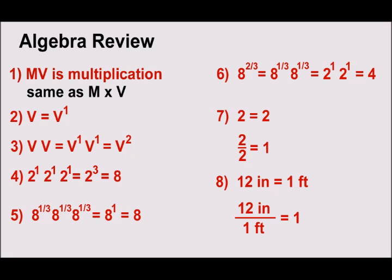Equation 6 is a bit more interesting where we have 8 to the 2 thirds. This is equal to 8 to the 1 third times 8 to the 1 third. And if you compare equations 4 and 5, you'll notice that 8 to the 1 third is the same as 2. So 8 to the 2 thirds equals 2 times 2 which equals 4. Equation 7 is really simple which is 2 equals 2. And you'll notice if you divide one side of the equation by the other side, you end up with 2 over 2 which equals 1. And this is an important lead-in to equation 8 which is 12 inches equals 1 foot. You know this. And if you divide 12 inches by 1 foot, then you get 1. So that's just a common thread. It looks kind of funny when you see 12 over 1 equals 1. But as long as you keep the inches in the numerator and the feet in the denominator, then you're good. Just don't accidentally delete those.